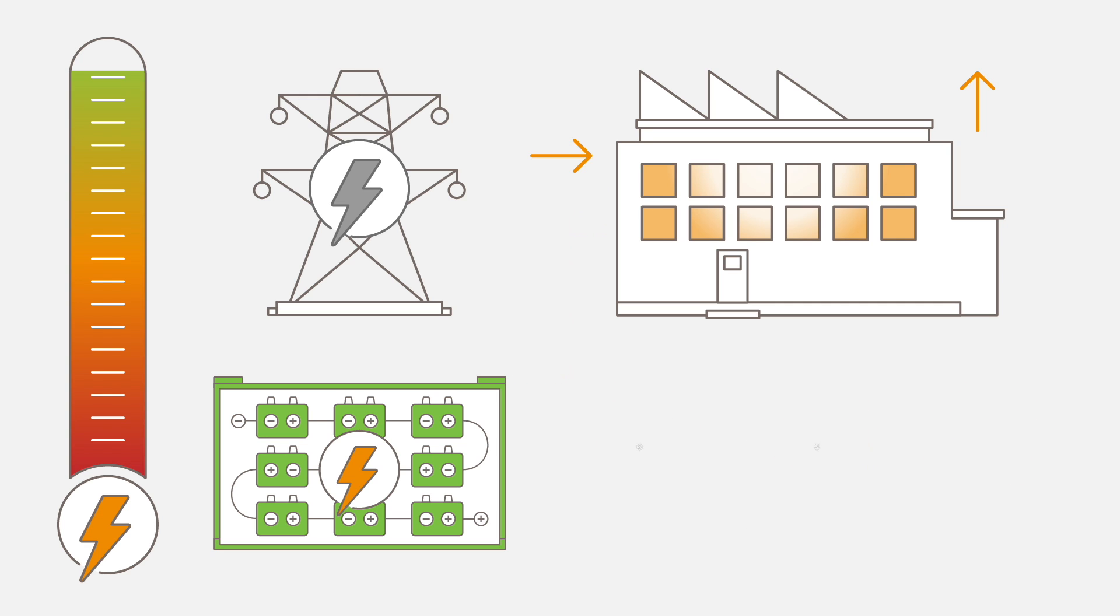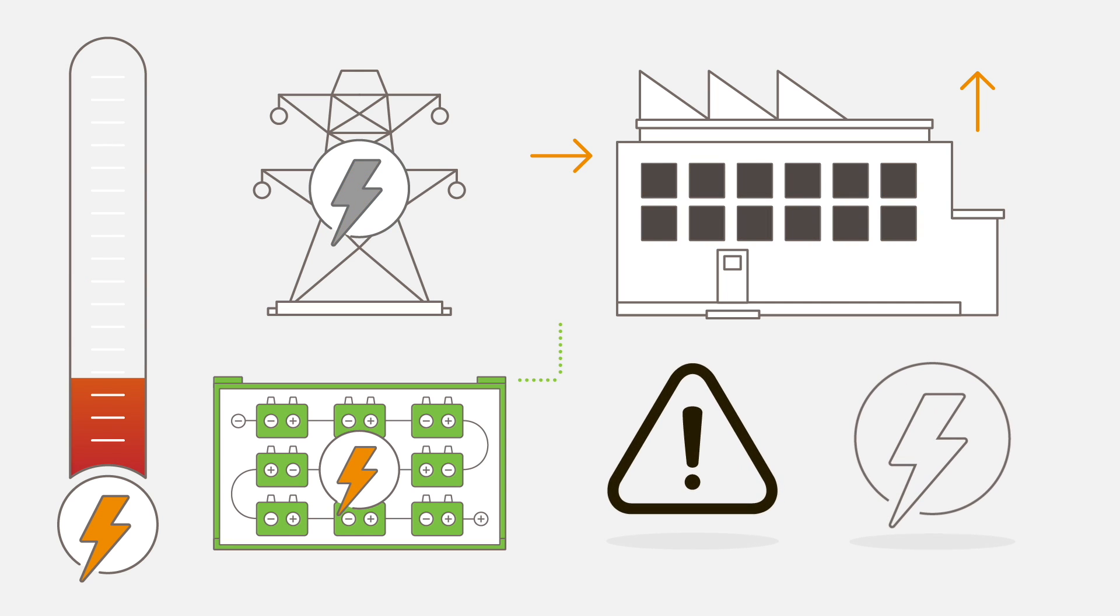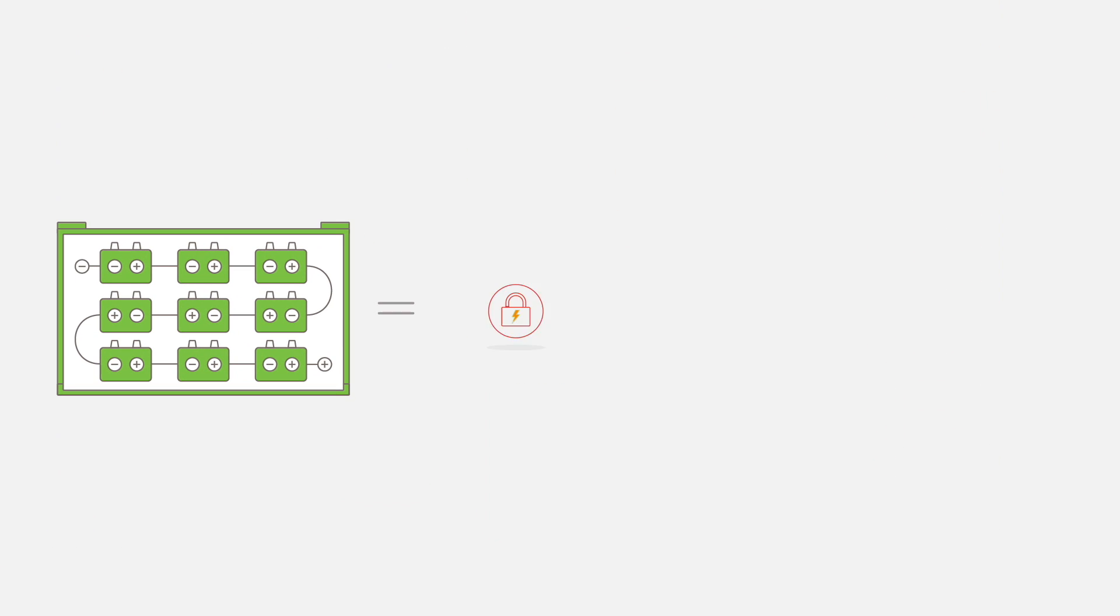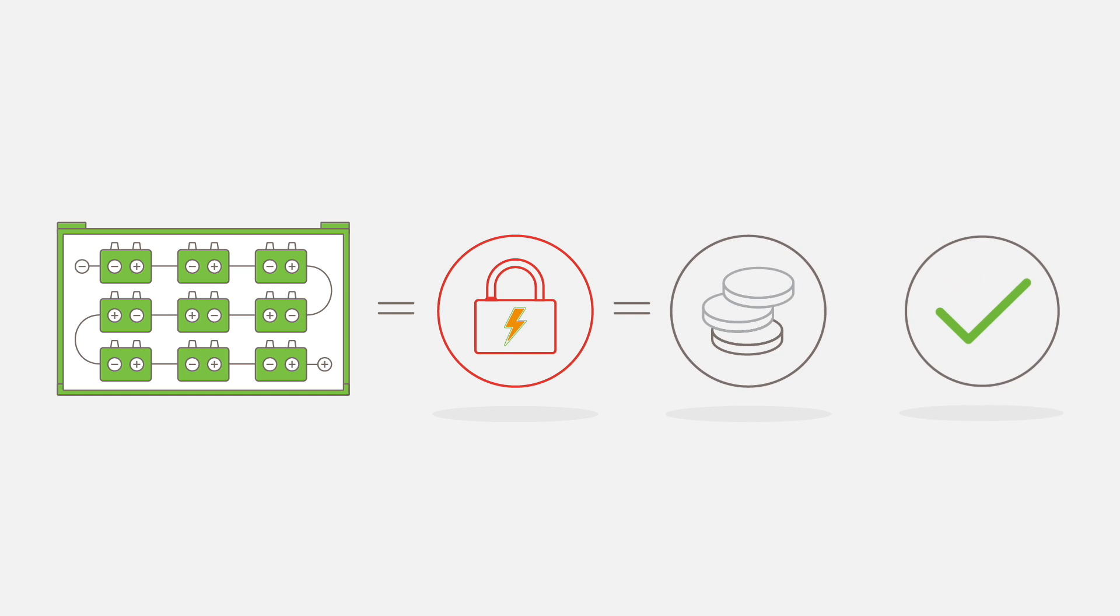Black start is the capability for the battery to recover a power plant in seconds during an unforeseen interruption. For front of meter utility and system operator customers who face the challenge of managing grid performance and stability, we can offer solutions which will improve system reliability and reduce overall energy costs.